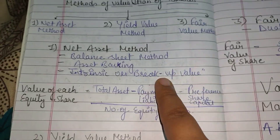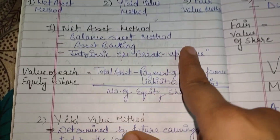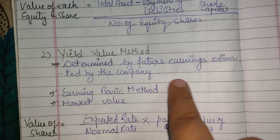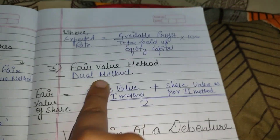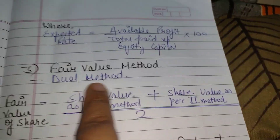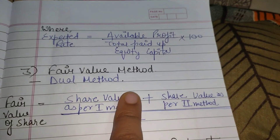Next is the Fair Value Method. The Fair Value Method is a combination of both the Net Asset Method and the Yield Value Method, so it is also called the Dual Method.